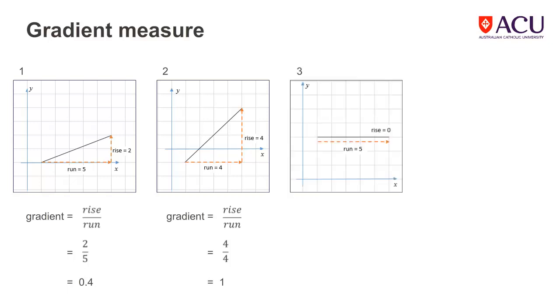In the third graph, we go 5 units along, but then no units up or down. In other words, the rise is 0. So the gradient evaluates to 0.